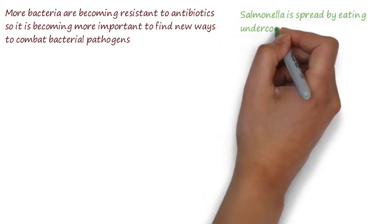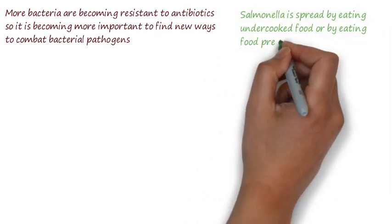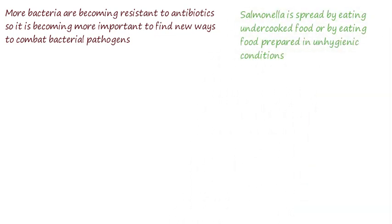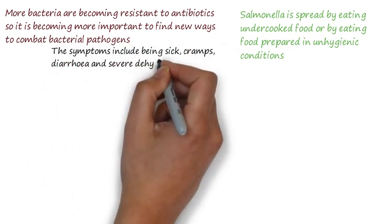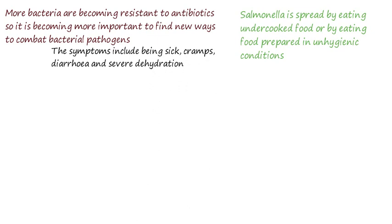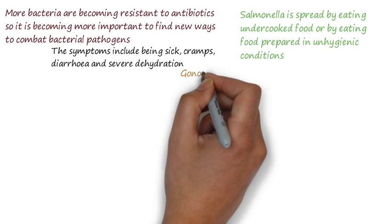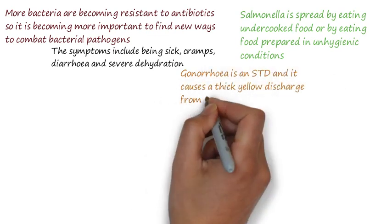Salmonella food poisoning is spread by bacteria ingested in food. The disease is spread by eating undercooked food or food prepared in unhygienic conditions. Symptoms include vomiting, cramps, and diarrhoea due to toxins secreted, and the infection can lead to severe dehydration. Poultry can be vaccinated against Salmonella to prevent transmission.